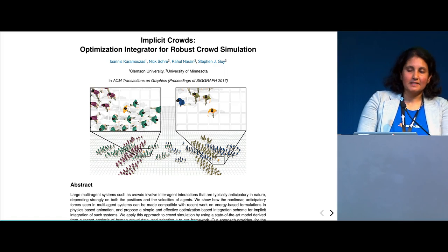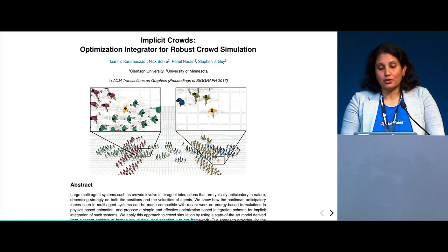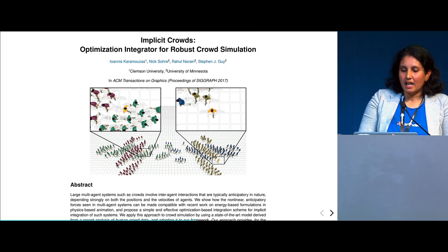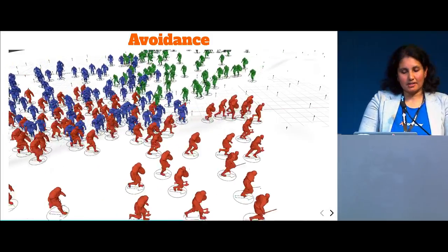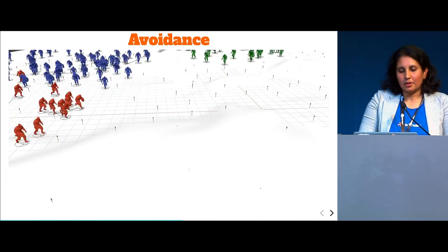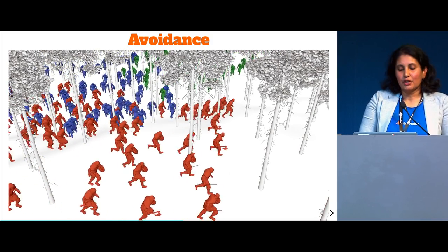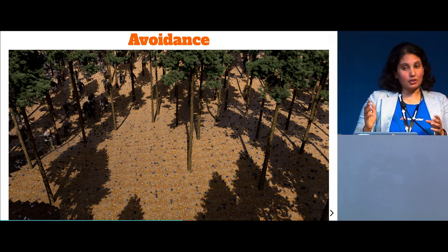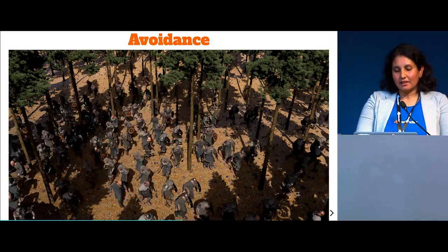Luckily, in 2017 a paper was presented at SIGGRAPH about using implicit force algorithms for crowd simulation. In 2018, the same group of researchers updated this algorithm and called it the implicit force time-to-collision, and that's basically the one I'm using. I tried this algorithm and was really happy with the results. If it weren't for this algorithm, I wouldn't have been able to get proper avoidance.